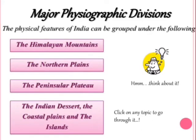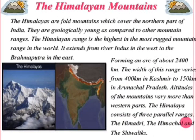The physical features of India can be grouped under the following: the Himalayan Mountains, the Northern Plains, the Peninsular Plateau, the Indian Desert, the Coastal Plains, and the Islands. Let's now look at the Himalayan Mountains.